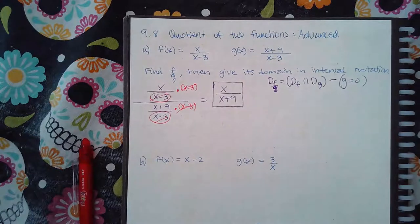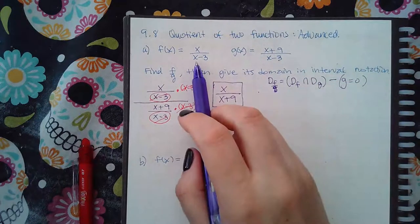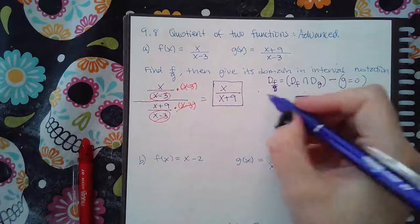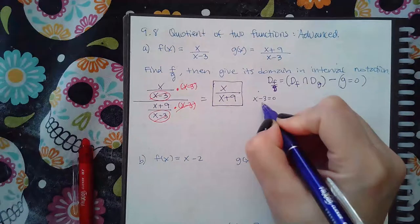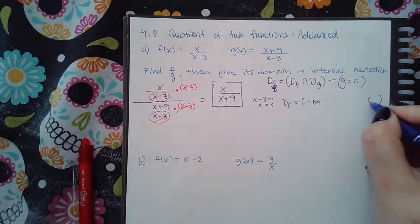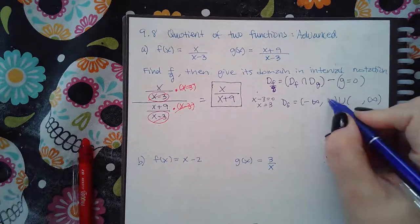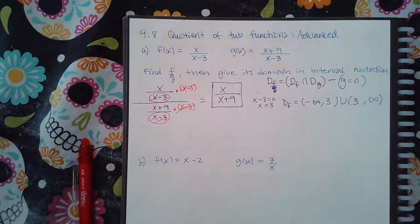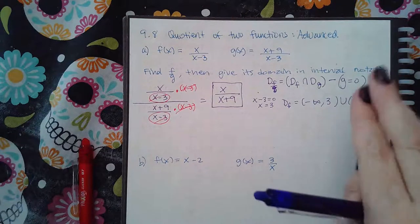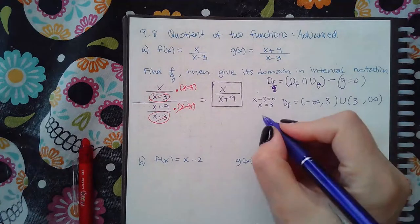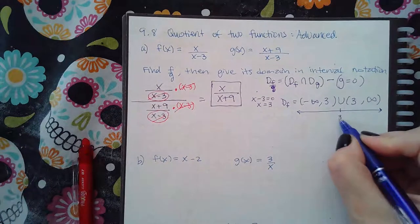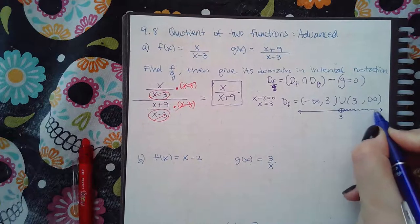Let's first find the domain of f. Since f is a fraction, the domain is all real numbers except wherever the denominator equals zero. Setting x−3 = 0 gives x = 3, which means the domain of f is everything from negative infinity to infinity except 3. On a number line, there is a hole at 3, with everything to the right and to the left included.